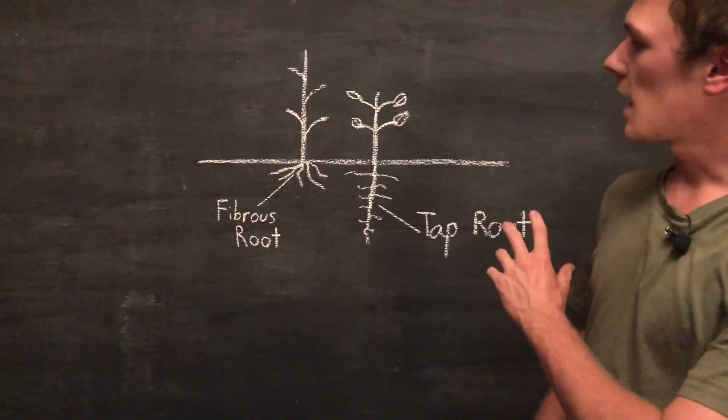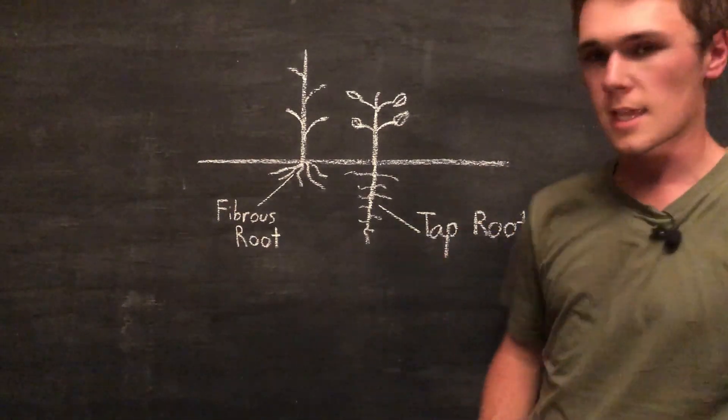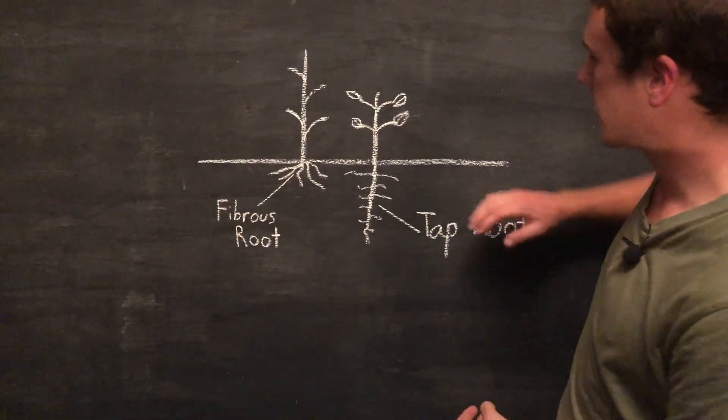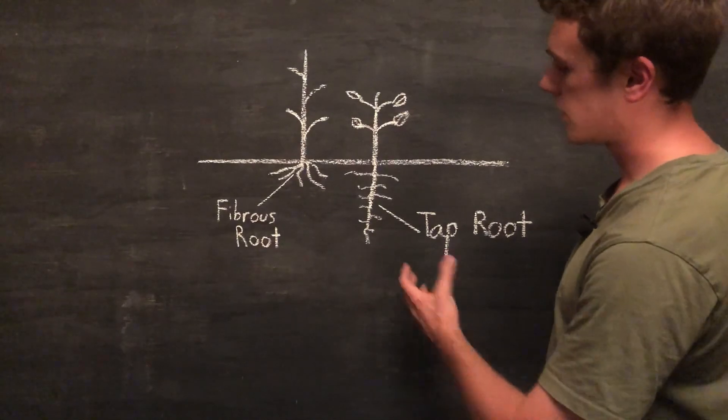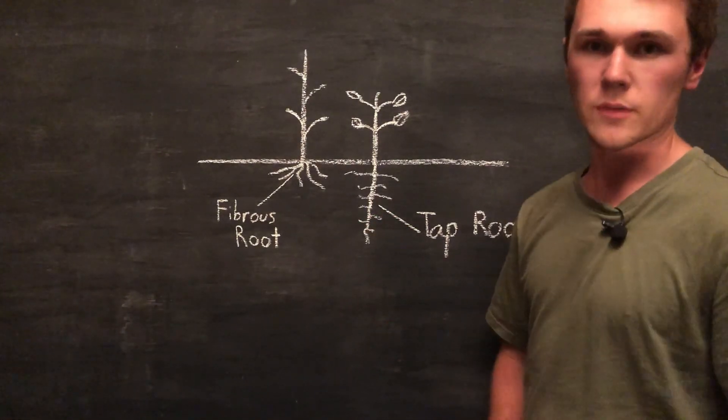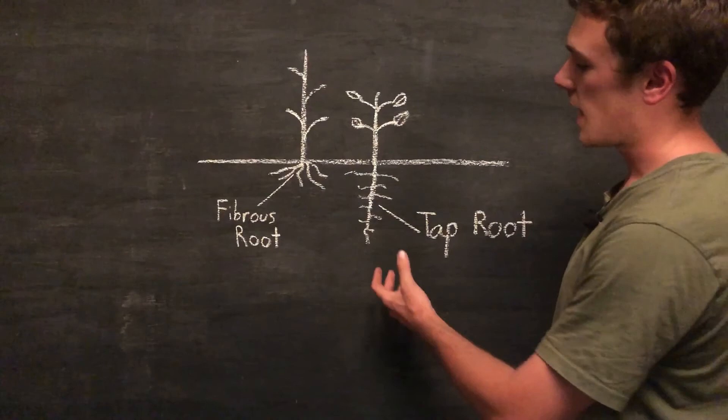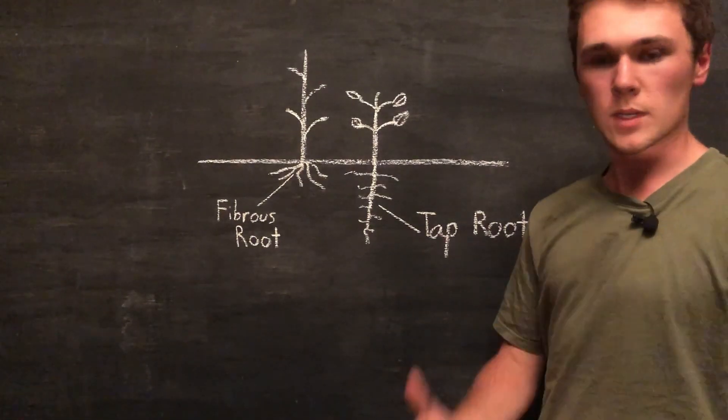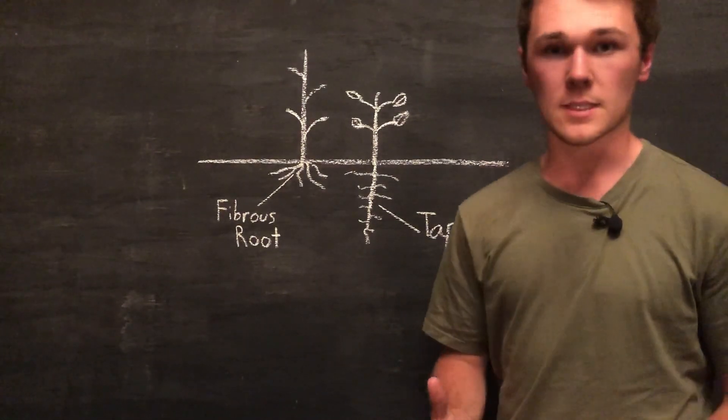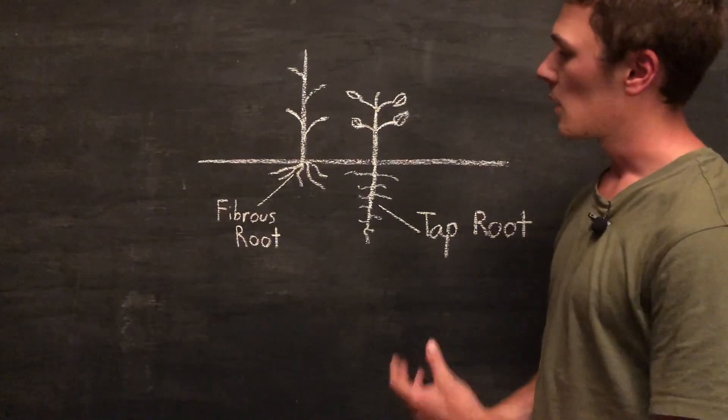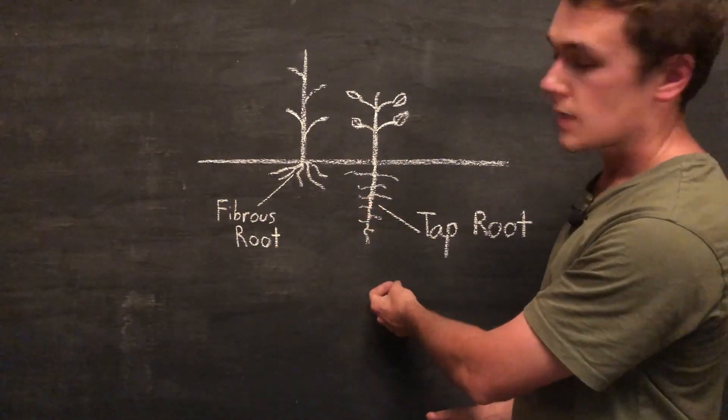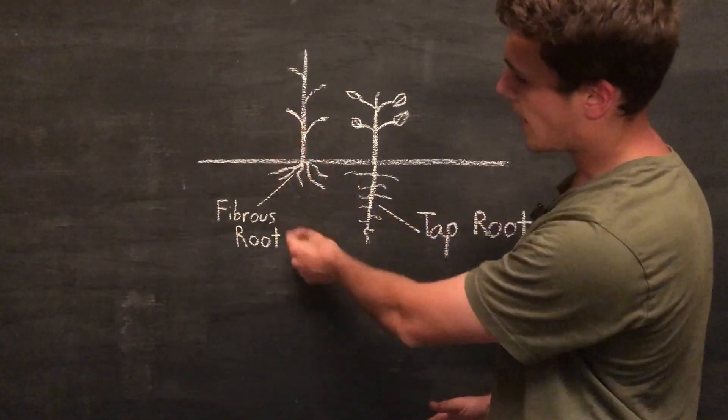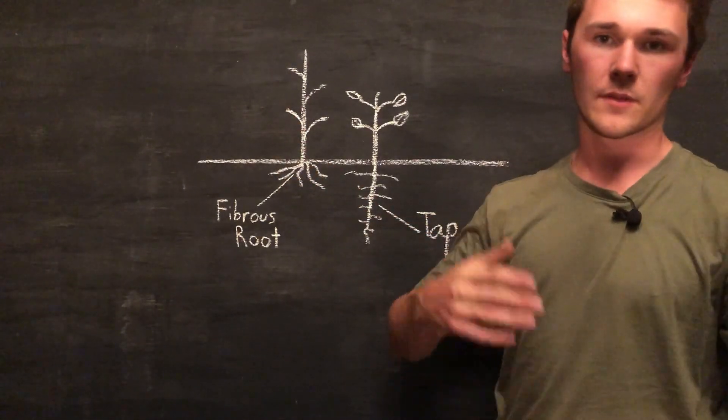Next we have our cowpea. The cowpea has a tap root, which is one single root that comes all the way down. This allows the cowpea to reach further down into the soil profile and absorb nutrients that are deeper down. In a way, these two plants can almost live together within the same space as the tap root of the cowpea can go past the fibrous roots of the sorghum.